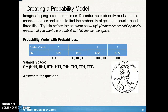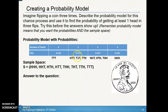If you add all those probabilities up they should equal one — if not, you did something wrong. Now, finding at least one head means one or two or three heads, so you could add those three probabilities together.